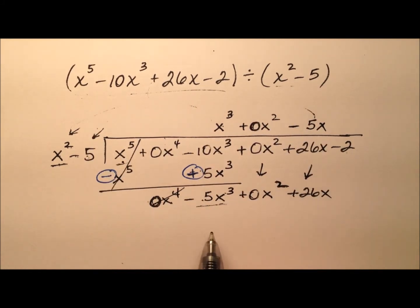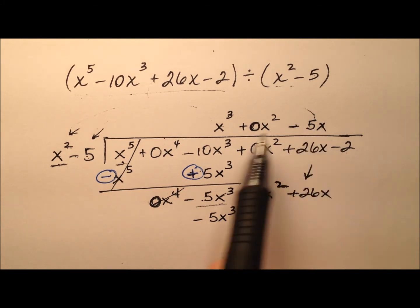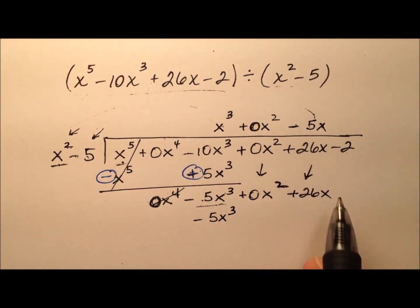And when I distribute through I'll have negative 5x cubed and then of course it's negative 5x times negative 5 which is positive 25x.